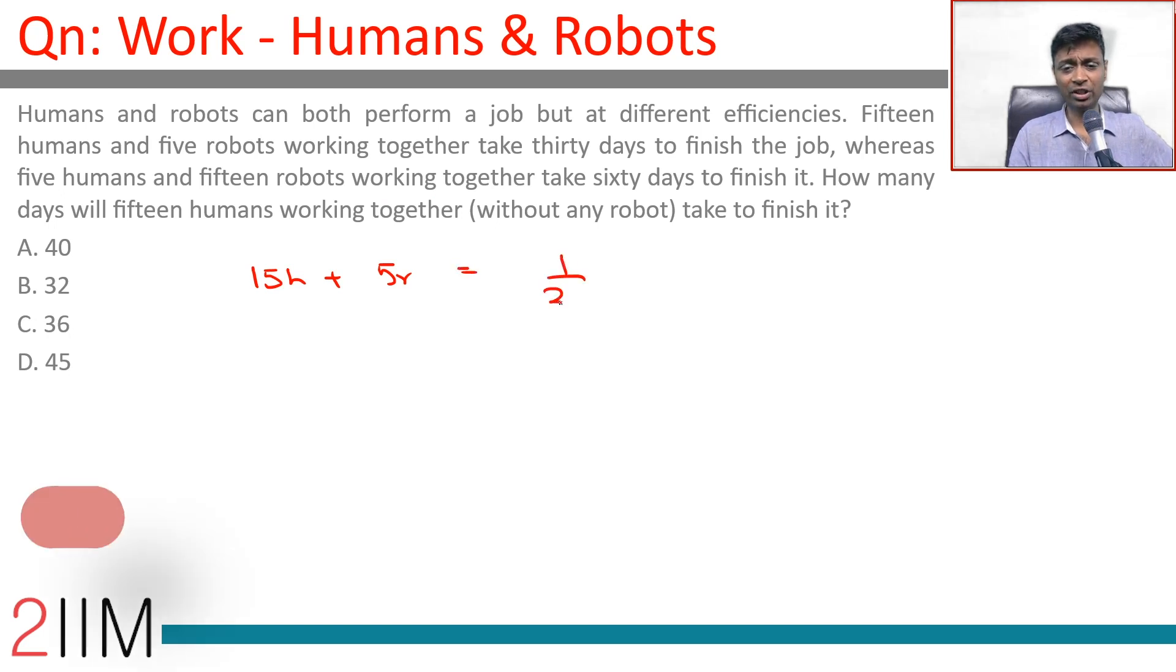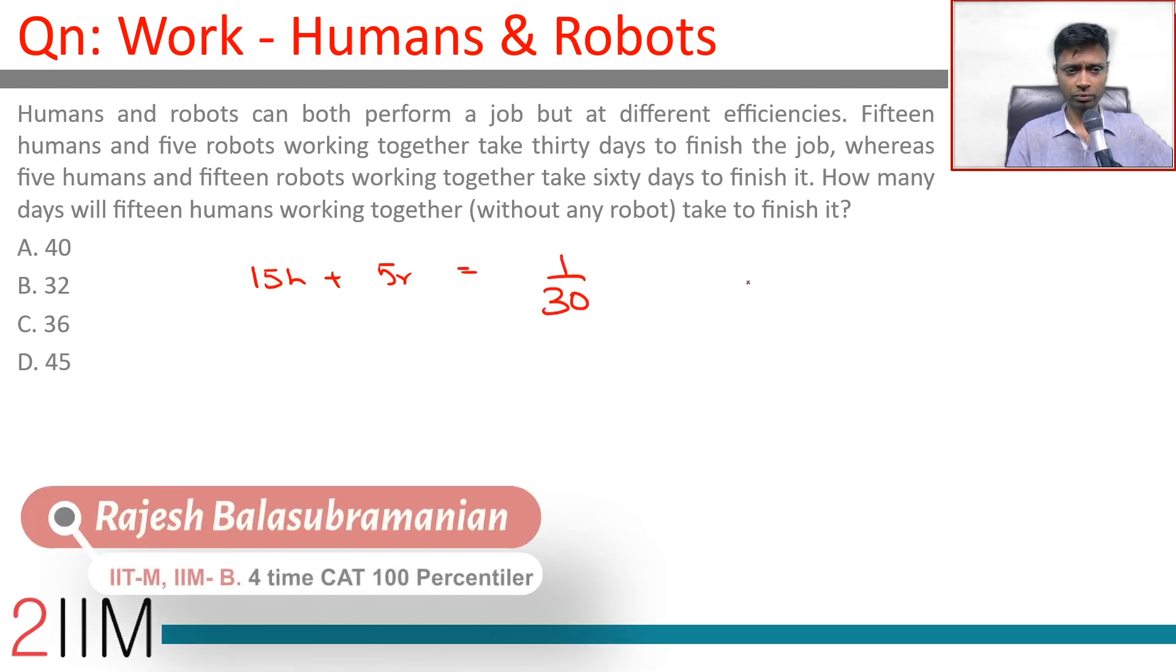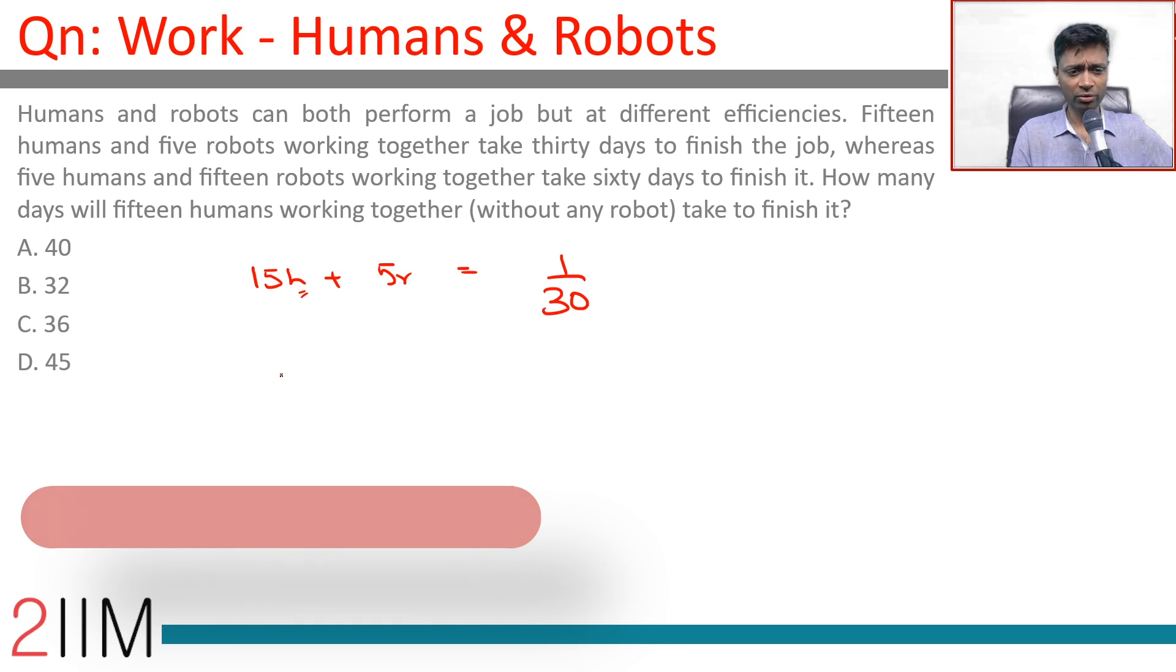In one day they finish 1/30th of the job. I'm using h as a proxy for how much a human can do in a day, whereas 5 humans and 15 robots working together will take 60 days to finish it.